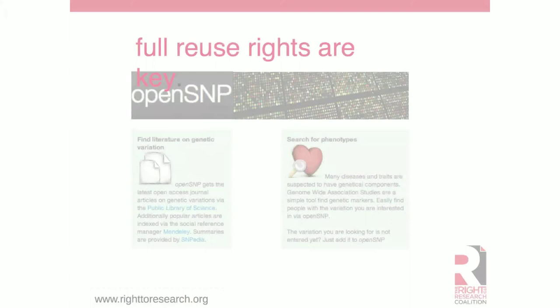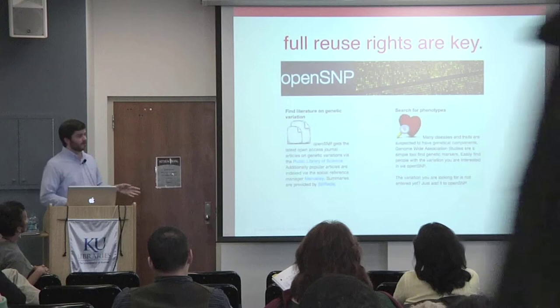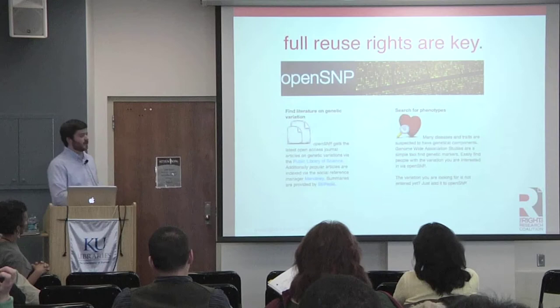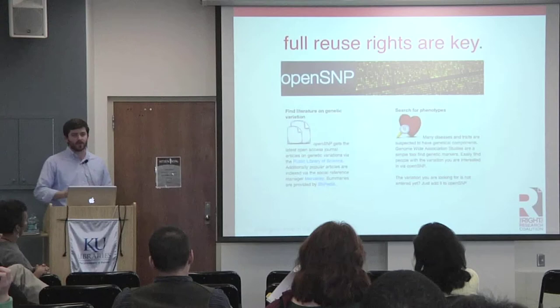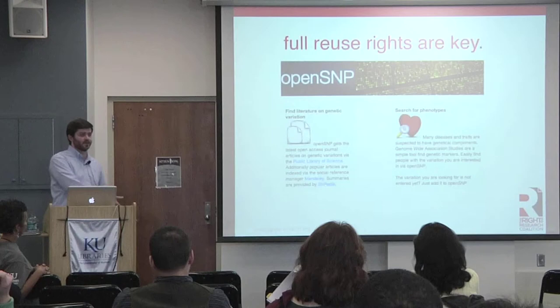One good illustration of the power of these tools is an application called OpenSnip, developed last year. It sits on top of the full text database of the Public Library of Science, the largest nonprofit open access publisher. It allows users to input a snippet of genetic code, then mines the entire full text of every article PLOS has published looking for that snippet. So if you're doing genetic research and find a snippet of genetic code that implicates a higher propensity for a certain condition, this will find every single research article that references that specific snippet. This powerfully illustrates what's possible when articles are made available under full reuse licenses.